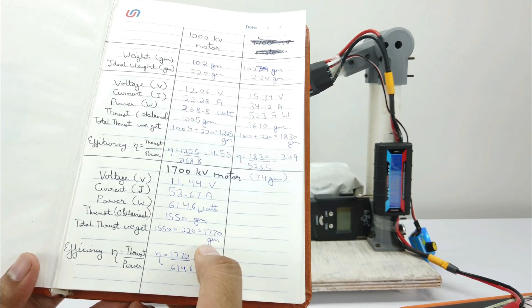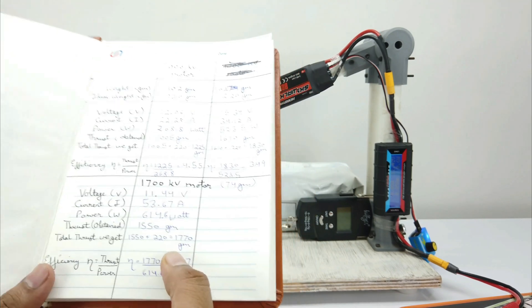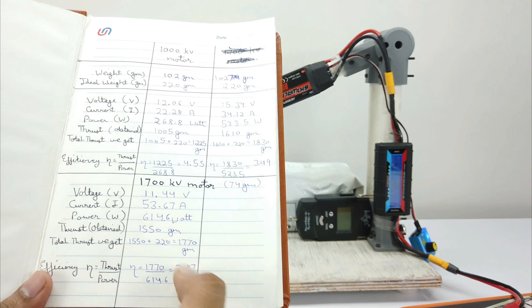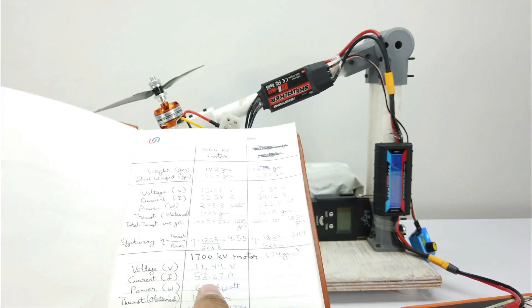After adding the ideal thrust, we got 1770 grams, which is quite good for a 3S battery. But the efficiency is very low, that is 2.7 because it consumed 614 watts.